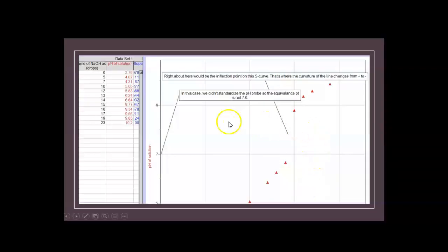In this case, we didn't standardize the pH probe, so the equivalence point is not at 7. Here is 7. The equivalence point seems to be closer to 8 on the pH scale. We didn't standardize. So even though we know that all we're doing is making sodium chloride water, and so it should be at 7 or a little lower with the carbon dioxide in the air, we didn't standardize this.